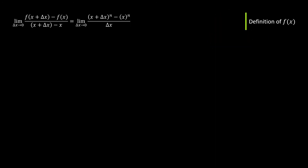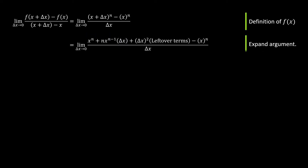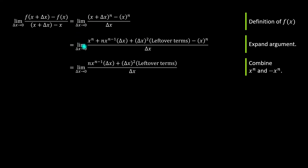Now for the algebra. Going back to the difference quotient with x^n substituted in, I replace (x + delta x)^n using that binomial expansion: x^n plus n·x^(n-1)·delta x plus delta x squared times the leftovers, minus x^n, all over delta x. The positive x^n and negative x^n cancel, leaving just the middle and remaining terms in the numerator.